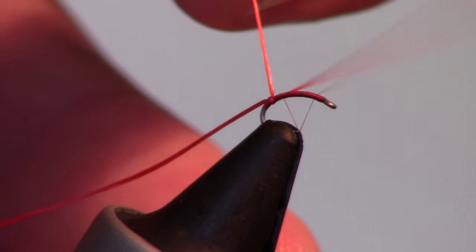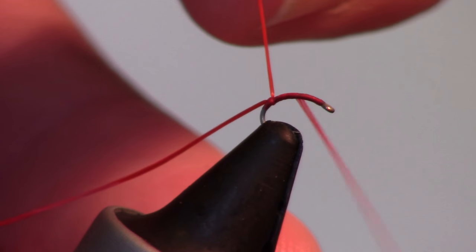Now pull back the front part of the material and bring your thread back up to just shy of the eye of the hook.